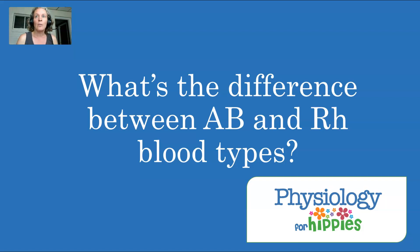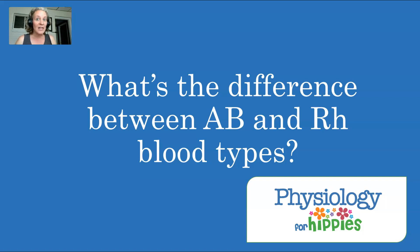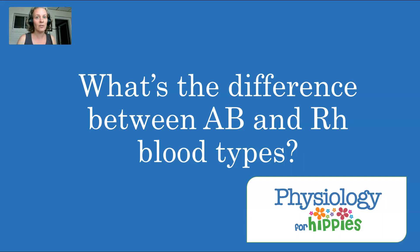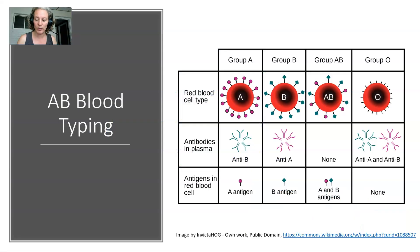The immune system is essentially looking for certain proteins to figure out: is this part of us, or do we need to do something about it? In the case of red blood cells, there are a number of different proteins that can determine whether the immune system is going to accept or reject that blood cell. The main ones we use in terms of figuring out if somebody can accept blood from someone else are ABO proteins and also RH proteins. These are two separate, completely different proteins that we identify on red blood cells.